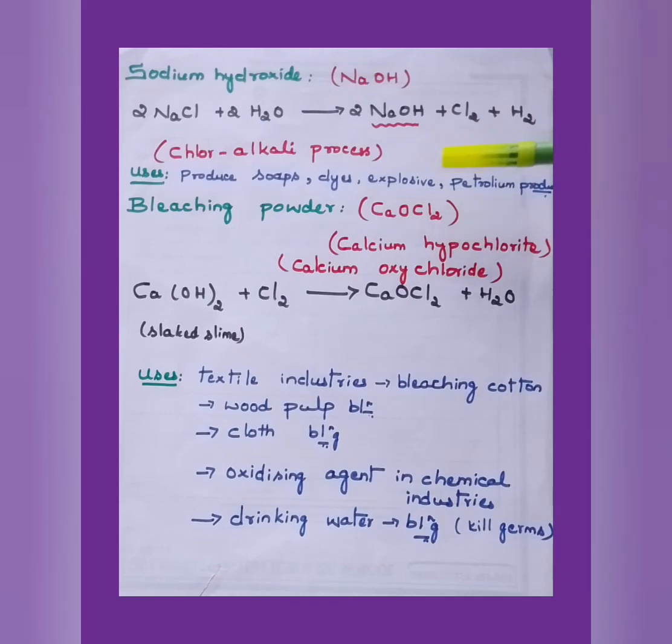Here, chlorine gas, which is given now for the anode, the setup is made. Accordingly, if you go through, if at all you have the materials to refer, you can just check out with that. Let us not go in detail, this much you remember, that's enough. What are the uses of sodium hydroxide? They are mainly used to produce soaps, dyes, explosive materials and even used in the petroleum products, production of petroleum products. These are the uses of sodium hydroxide.